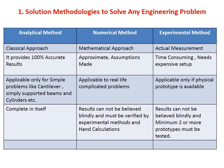The numerical method is used whenever we have complex geometry for structural, thermal, or magnetic analysis. The analytical classical approach provides 100% accurate results. In the experimental method, we can take multiple trials and reach accurate results. However, in the case of the numerical method, it is based on assumptions — because of that, it provides approximate answers rather than exact solutions. Numerical methods converge to the exact solution but provide approximate answers.